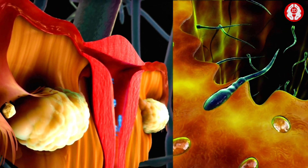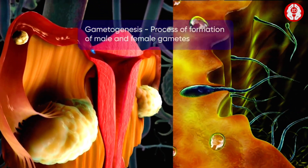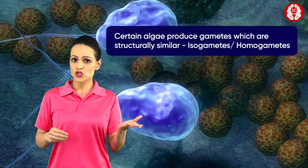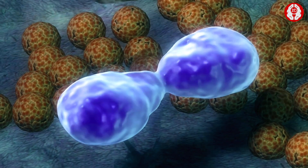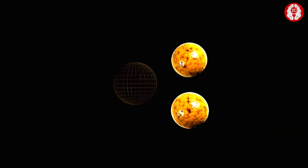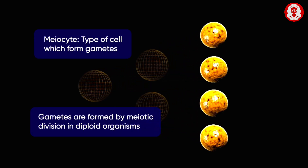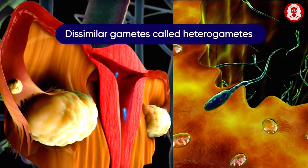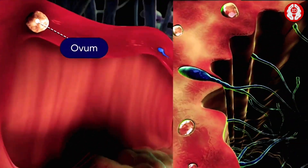The pre-fertilization events are initiated by gametogenesis, which is the formation of male and female gametes. Certain algae produce gametes which are structurally similar, called isogametes or homogametes. In haploid organisms like algae, gametes are produced by mitosis. In diploid organisms like human beings, gametes are produced by meiotic division of meiocytes. Human beings produce dissimilar gametes called heterogametes, where the female gamete is called ovum or egg, while the male gamete is called a sperm.